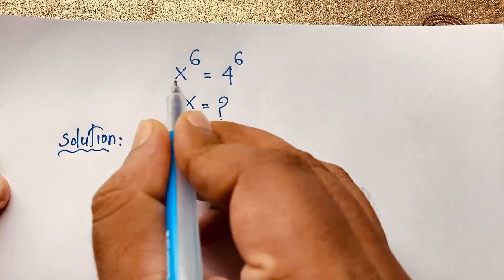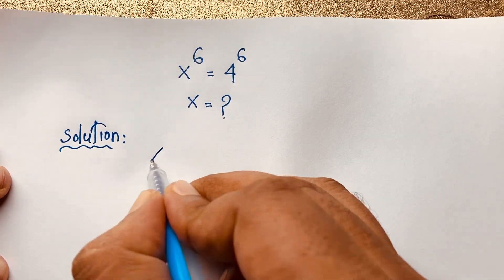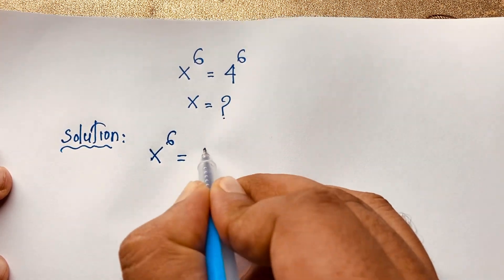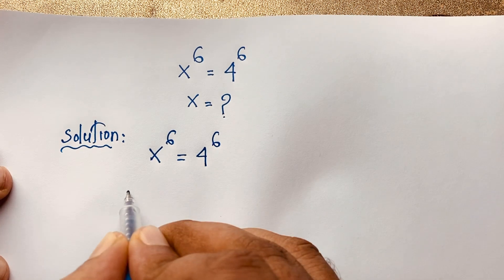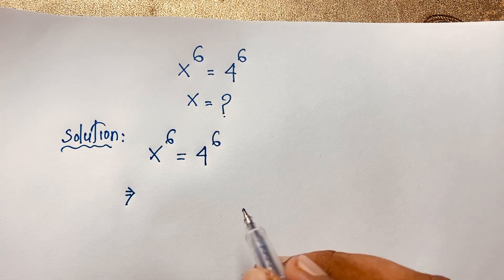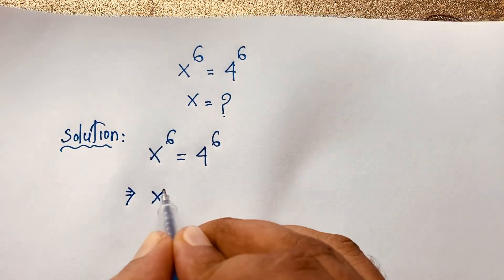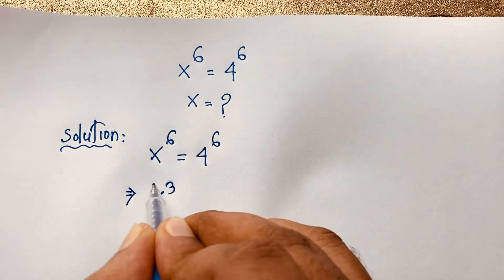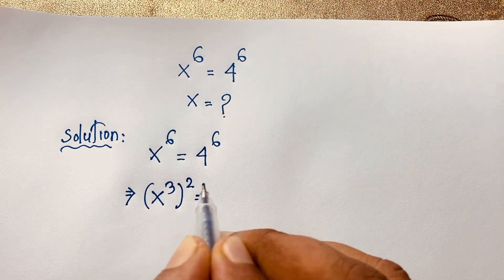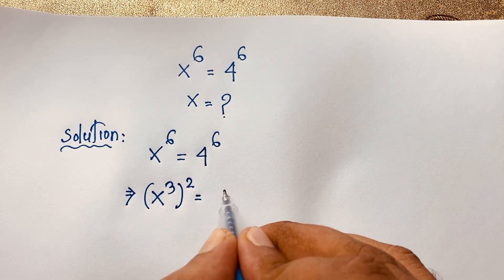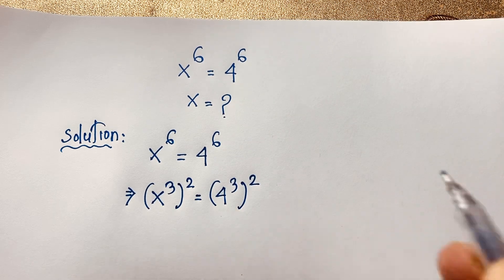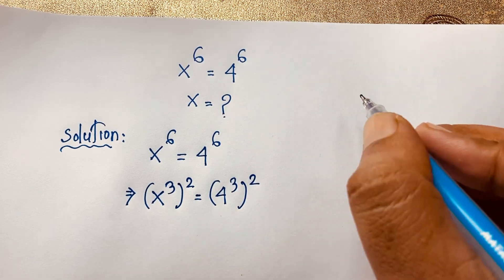Our question is x to the power 6 is equal to 4 to the power 6. Now x to the power 6 can be written as x to the power 3, bracket power 2. And here 4 can be written as 4 to the power 3, bracket power 2.